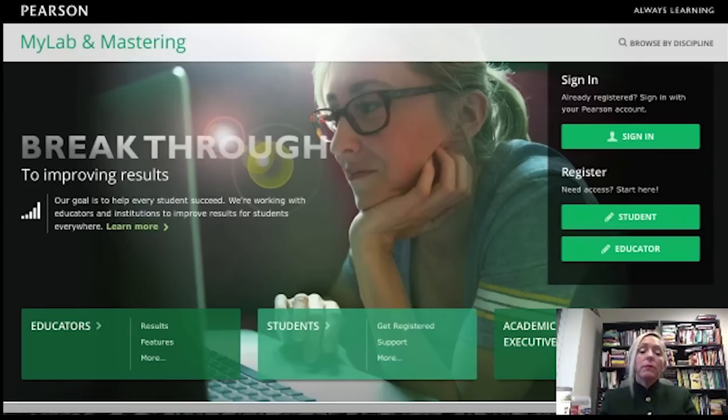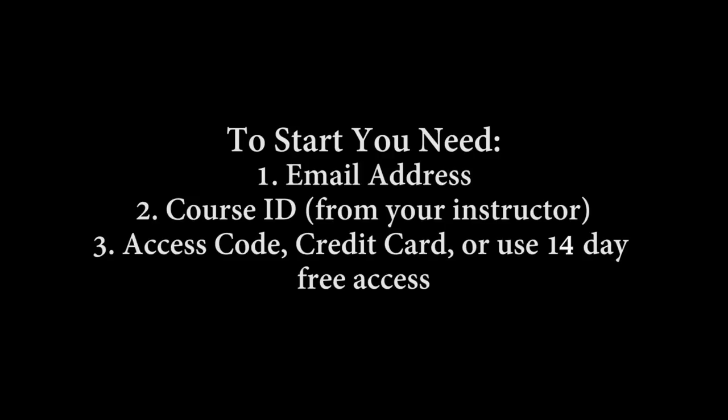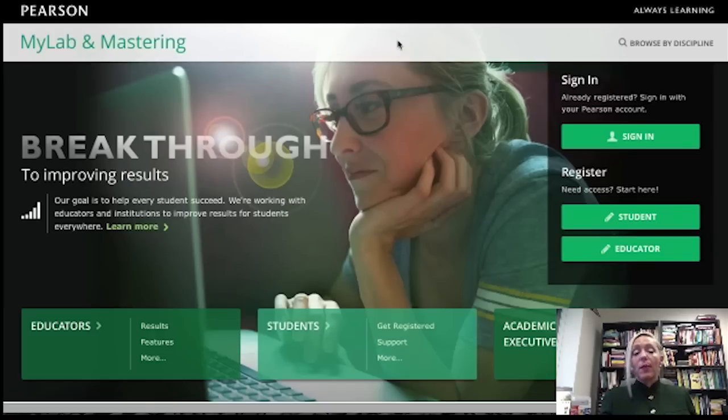Now, you need to have, in order to start, you need to have an email address, a course ID, and an access code. You have an email address from your college, or you can use a personal email address. You get your course ID from your instructor. What that does is it links the assignments that your instructor has created to your account, so that when you do your assignments, they cross over, and then the instructor can facilitate and assist you with your questions.